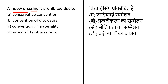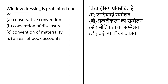Window dressing is prohibited due to — options: (A) conservative convention, (B) convention of disclosure, (C) convention of materiality, or (D) audit of books of account. Window dressing is considered an unethical practice because it involves deception and advancement of management's interest instead of the interest of information users such as owners, investors, or the government. So the answer is option B — window dressing is prohibited due to the convention of disclosure.